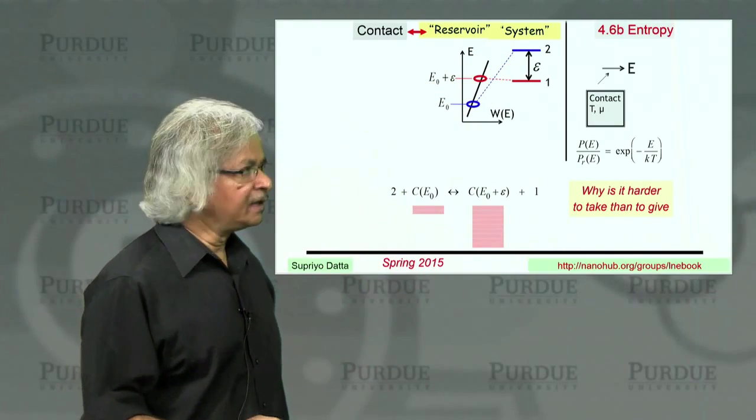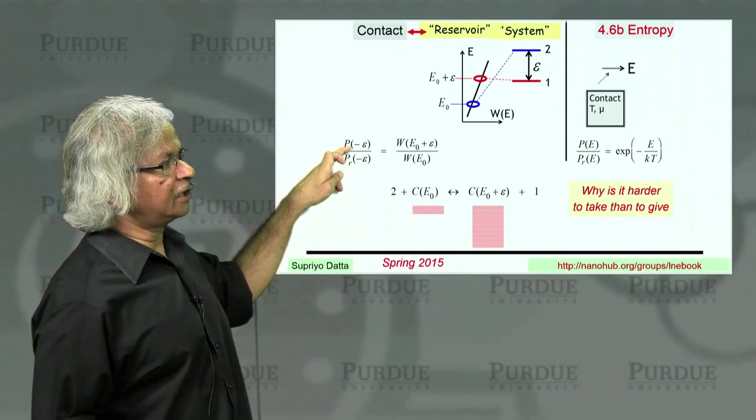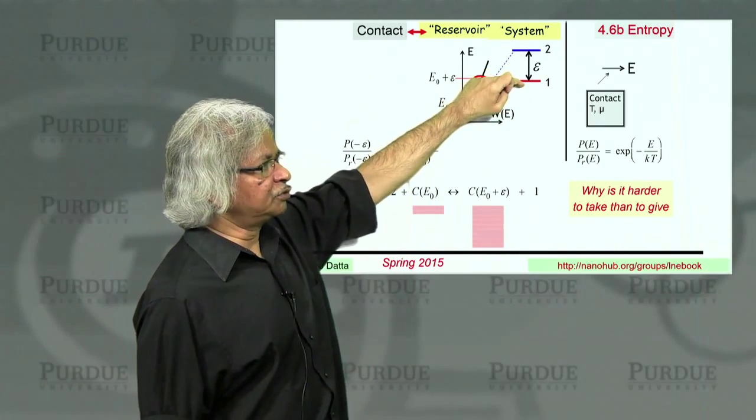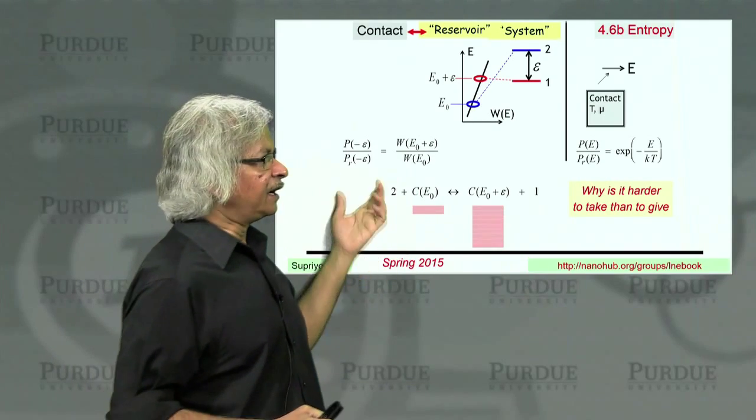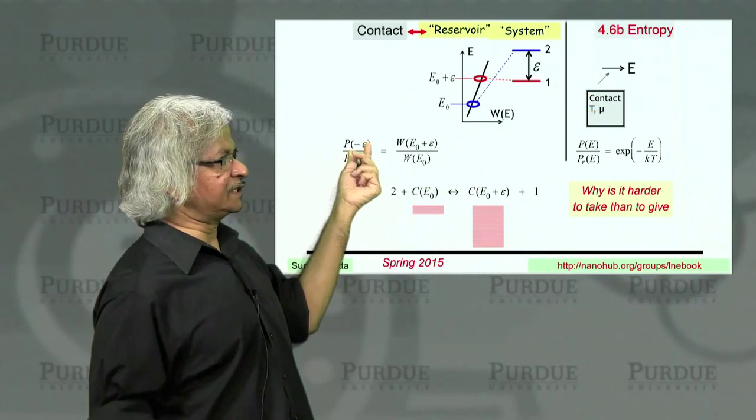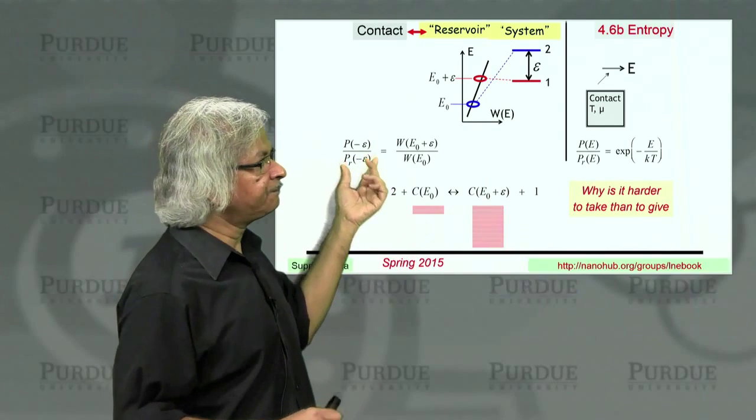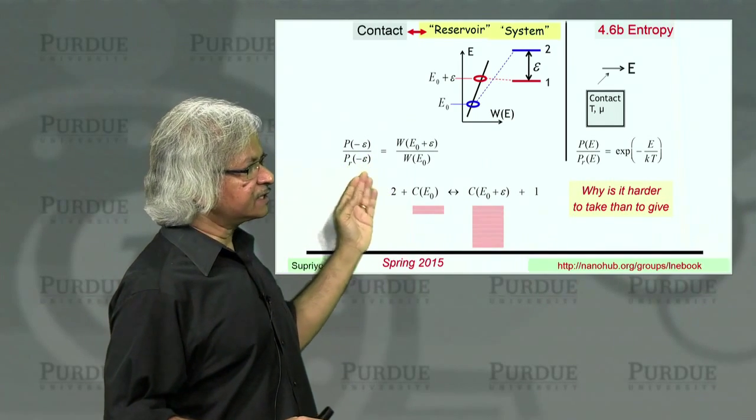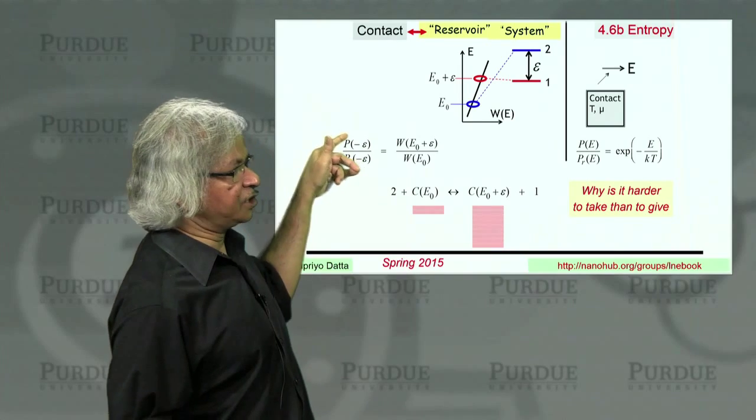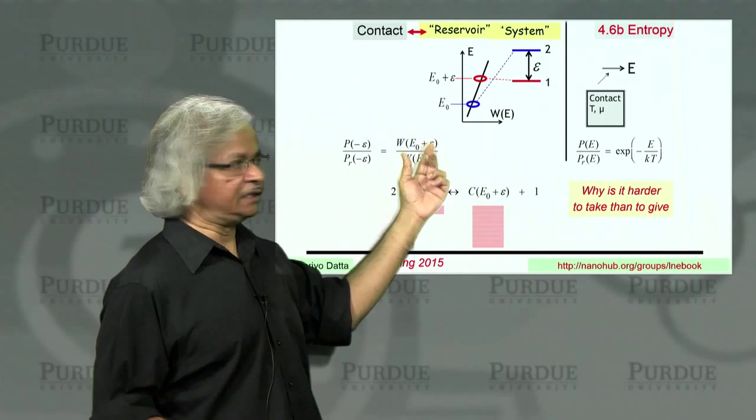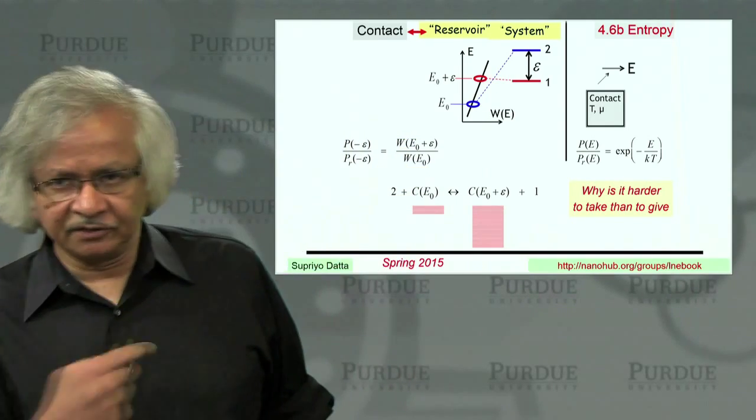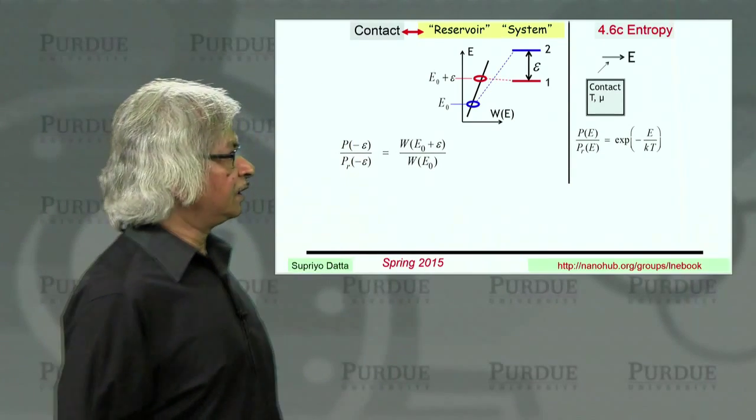So mathematically, you could write this probability of giving up energy epsilon to the contact. So when you go from two to one, you give up an energy epsilon to the contact. And because of our sign convention, taking energy is positive. So giving up energy is like minus epsilon, epsilon being a positive number. And you consider the reverse process. That ratio is this ratio of the Ws at these two energies.